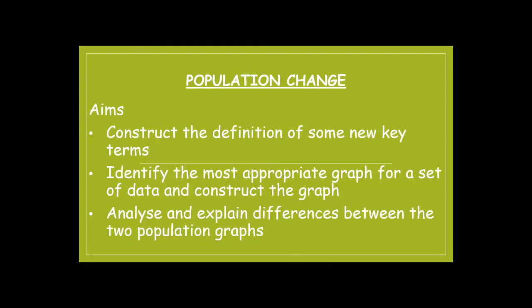Hi everyone and welcome to Lesson 5 of Theme 2 GCSE Geography. Today we're going to be focusing on population change. So far we've been focusing on a relatively local or national scale — what's happening along the urban-rural continuum, why people are leaving the city and moving to the countryside, what's happening to services in the most remote rural areas, mostly staying focused in Britain. What we're going to look at now is one of the main challenges facing humanity: the fact that population on our planet is growing. We're going to look on a global scale at why population is changing in LICs and HICs, and the next lesson we'll move on to the impact of that change.